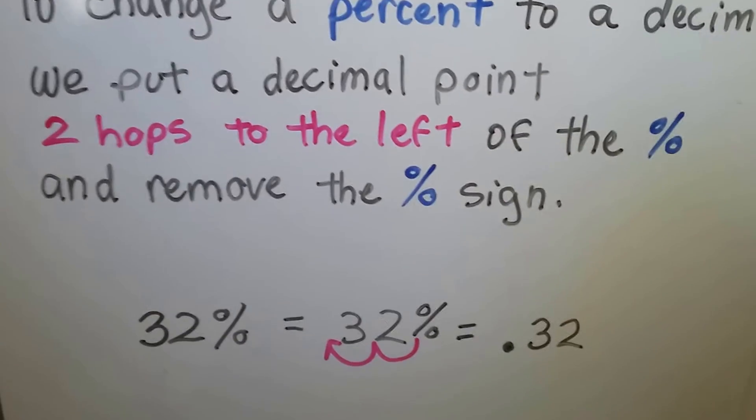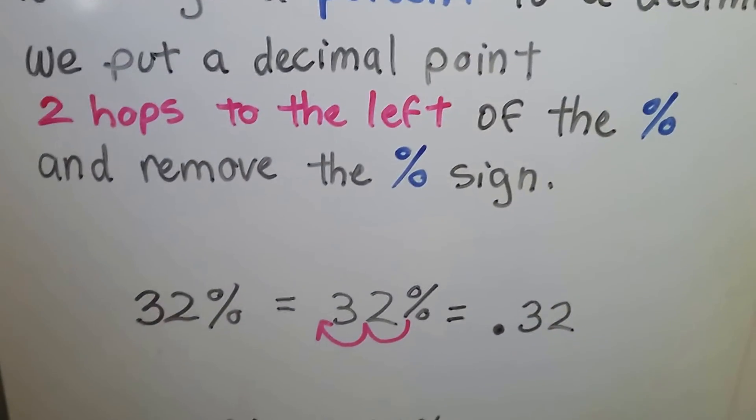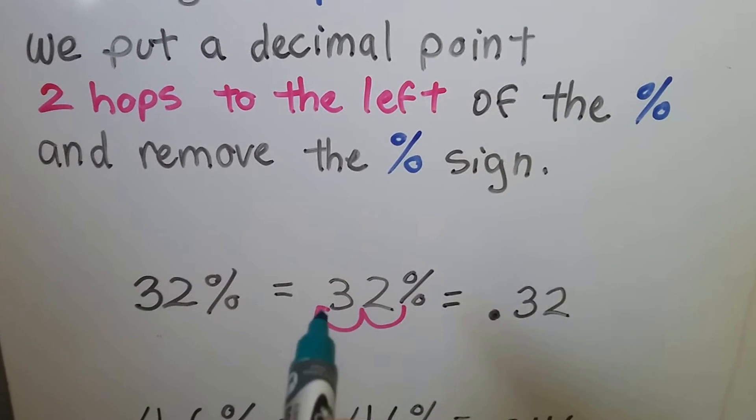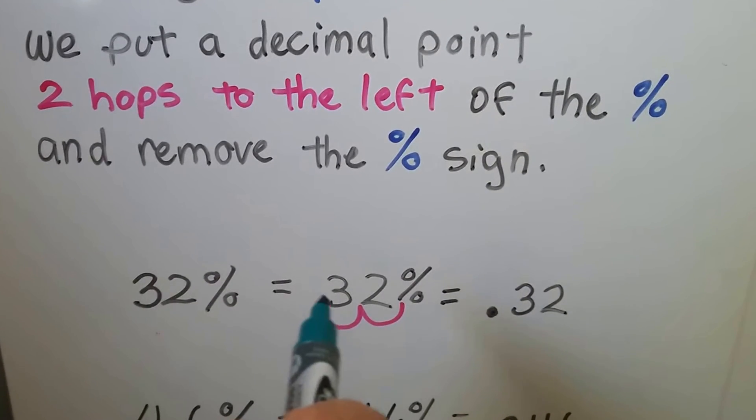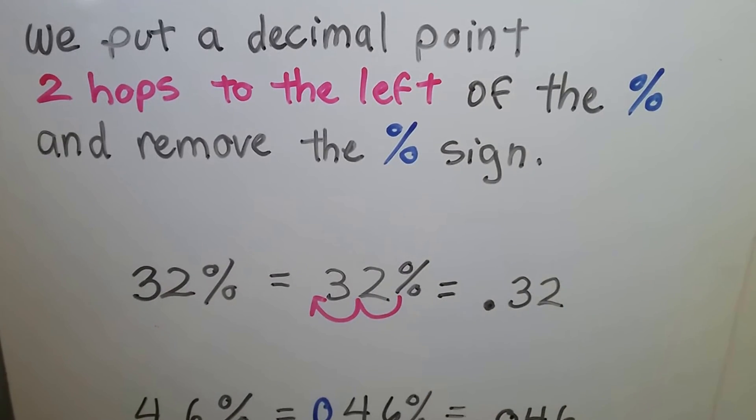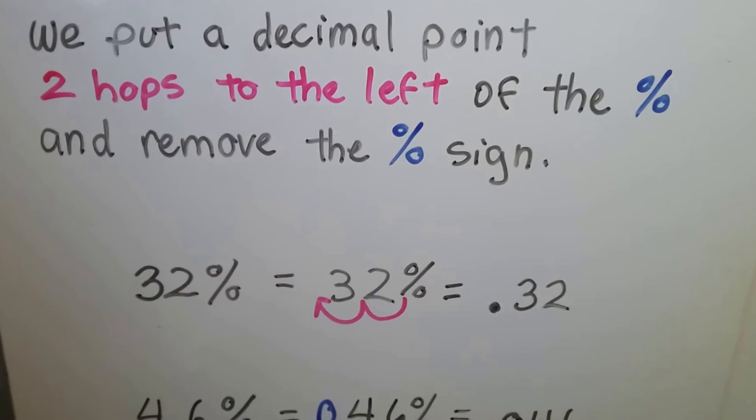So if we have 32%, we just count over two hops from this percentage sign, one, two, we put a decimal point right there, and we just take off the percentage sign. We have 0.32.